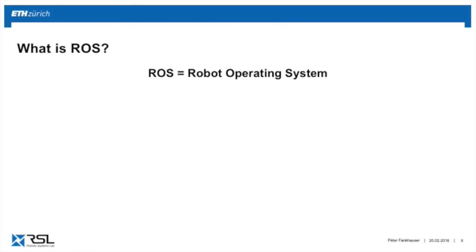So what is ROS? ROS stands for the Robot Operating System. It's not actually an operating system like Windows, Mac, or Ubuntu. It's more a middleware that lives between the actual operating system and the program that you write.